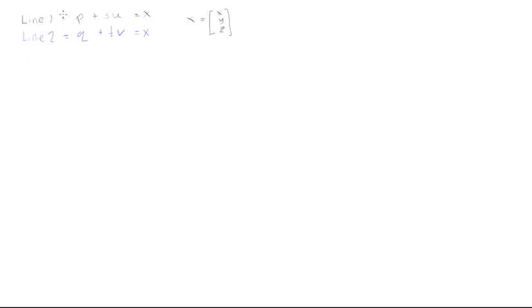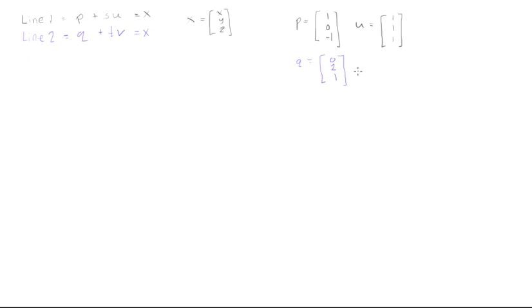Let's assign some values to our points and direction vectors. For line one, point P equals (1, 0, -1) and direction vector U equals (1, 1, 1). For line two, point Q equals (0, 2, 1) and direction vector V equals (3, -1, -1).